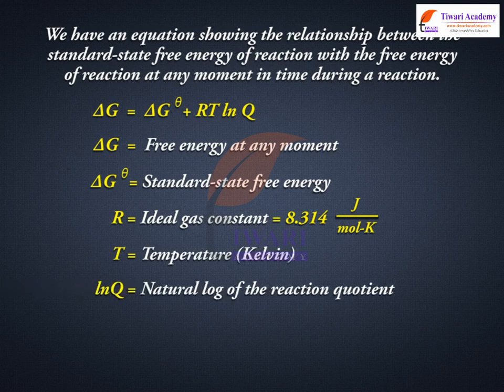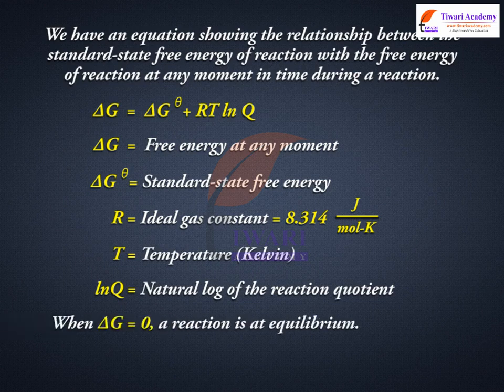Natural log Q is equal to natural log of the reaction quotient. When delta G is equal to 0, a reaction is at equilibrium, and Q is equal to K.